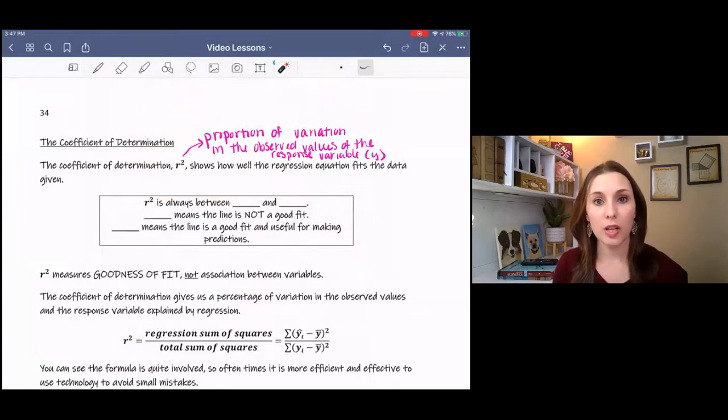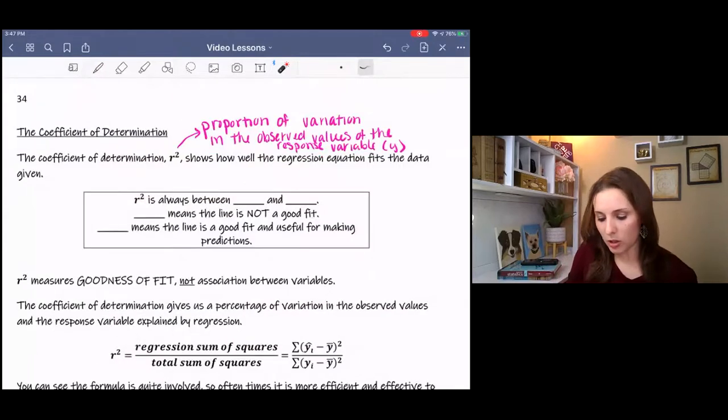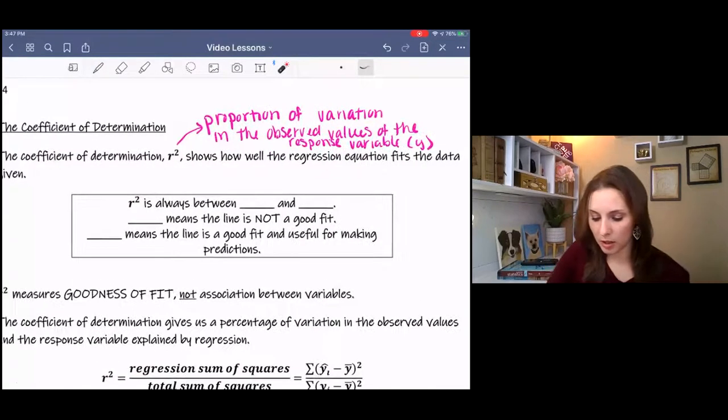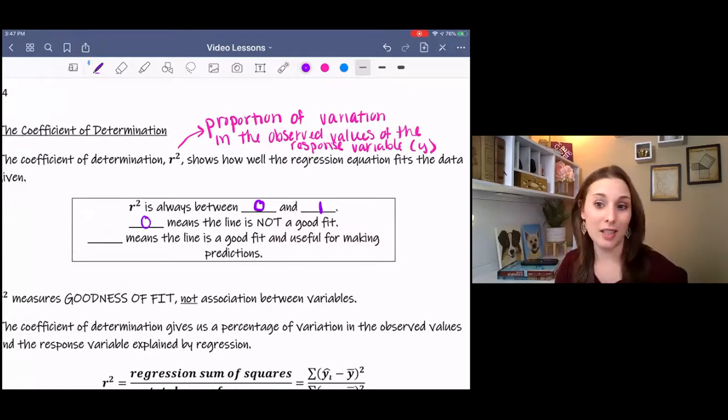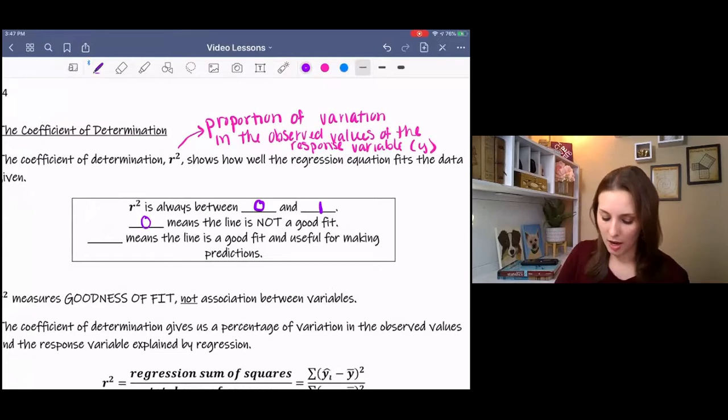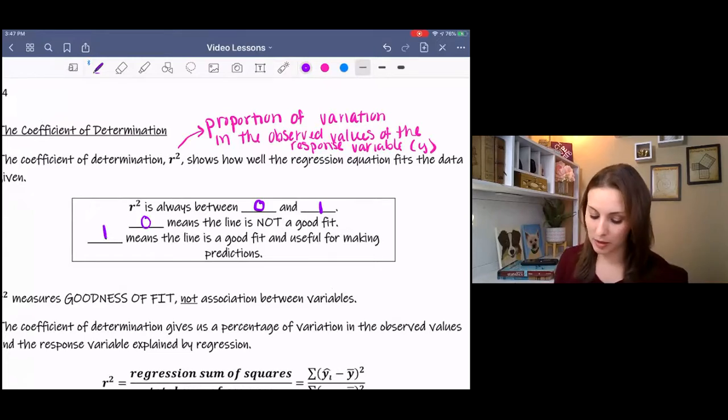So r squared tells us whether the regression equation line is a good fit for the data or not. R squared is always between zero and one. Zero means that the line is not a good fit, and one means that the line is a really good fit and useful for making predictions.